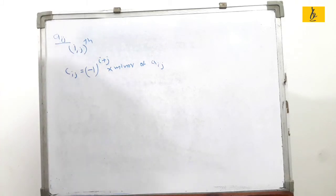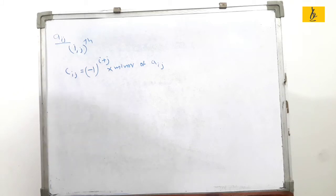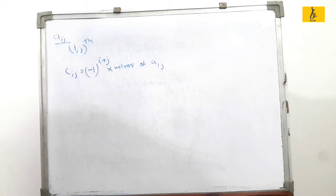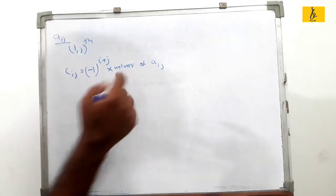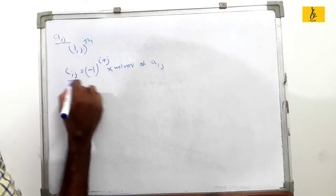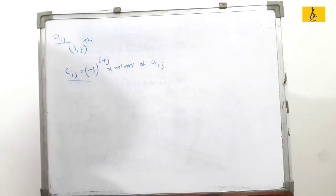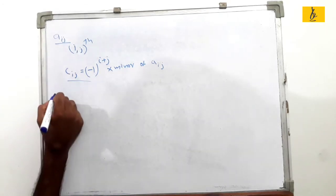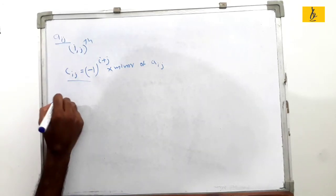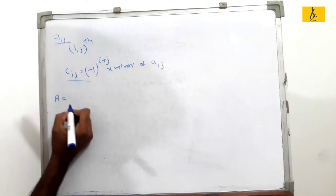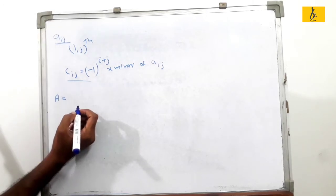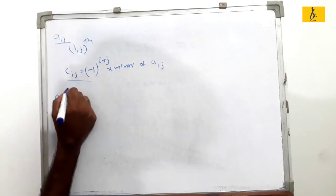Now we discuss a different method with an example. We will try to do a matrix. A is equal to: the first row is minus 7, minus 2, 4.